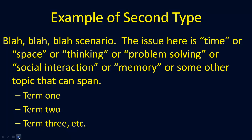The second type of question presents a scenario. The issue will involve time, space, thinking, problem solving, social interaction, memory, or some other topic that can span multiple units. They'll give you a list of terms — it could be four, five, six, seven, or eight terms. The idea is to take those terms and connect them to the scenario that the FRQ states. Do that and you can score as many points as possible out of the six, seven, eight, or nine points available for that question.